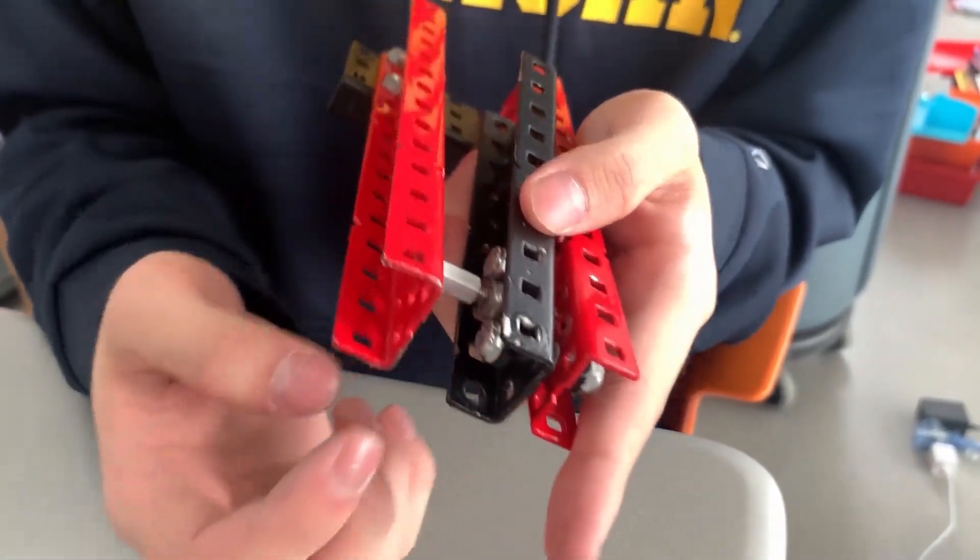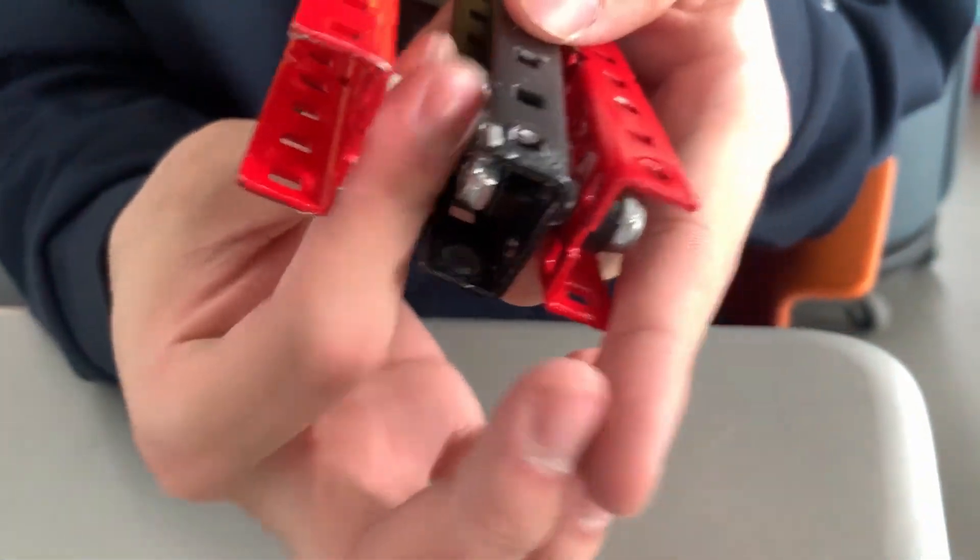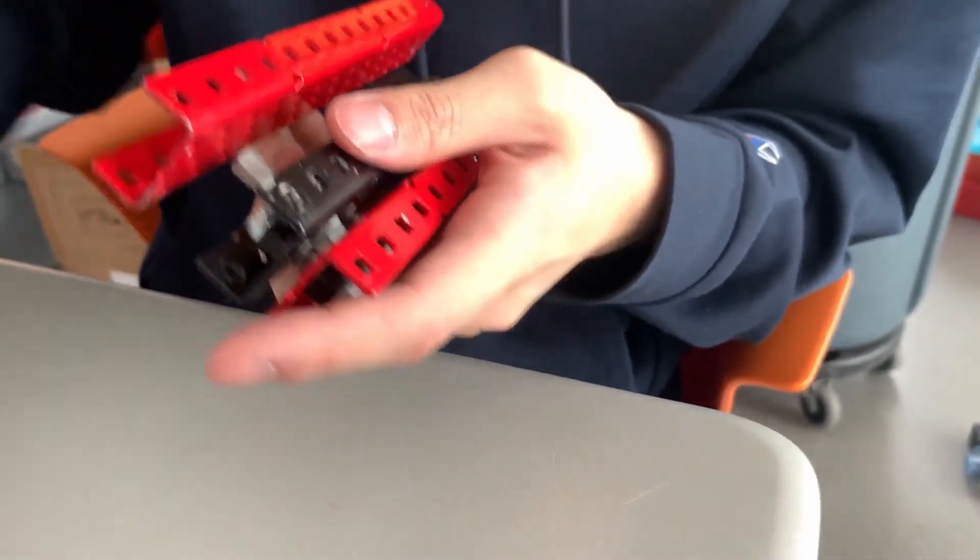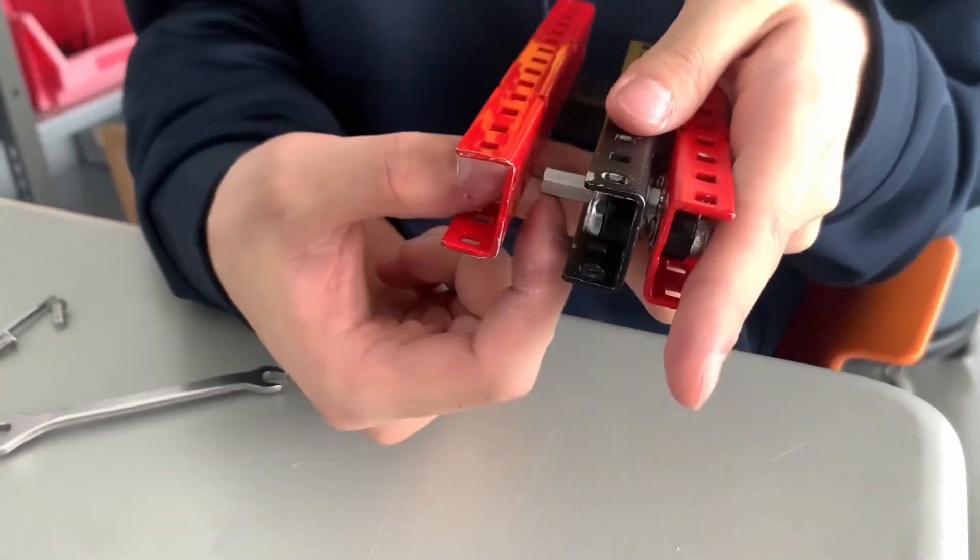You'll want to just put the standoff through and screw it into the thread. Make sure that there is some thread behind your nylon side. Then just tighten it slightly. Then you'll want to basically screw it in on this side.